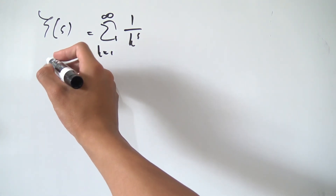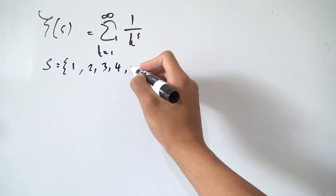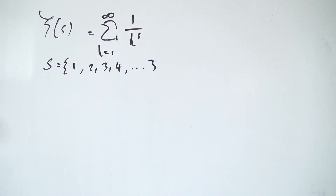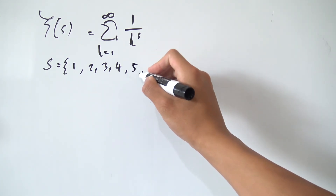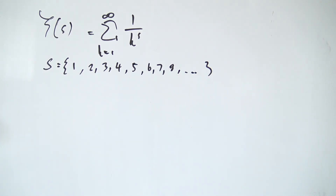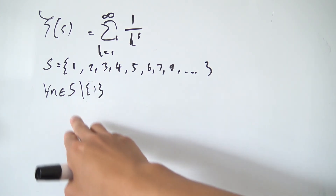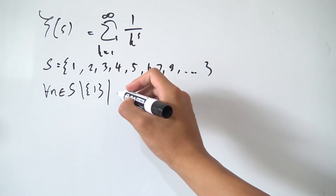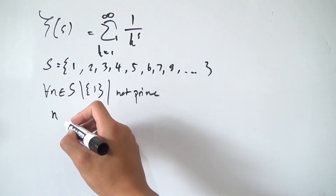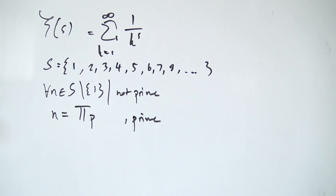I want to consider some set S, which is going to be the set of all natural numbers: 1, 2, 3, 4, 5, 6, 7, 8, and so on. I want to look at all the numbers that are not prime in this set. For all n elements of S, excluding 1, for every single element that's not prime, we can express n as some kind of product of primes. That's one of the properties of prime numbers.